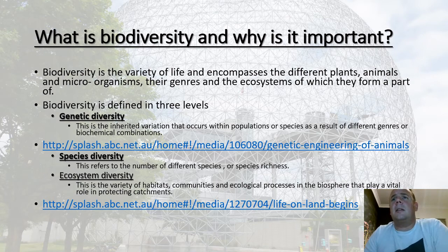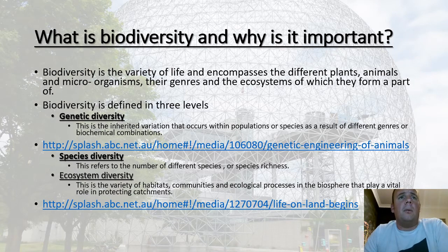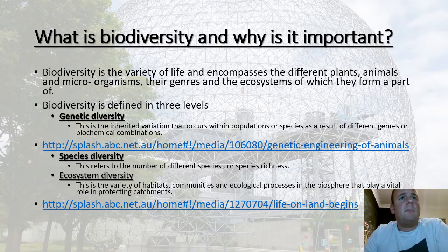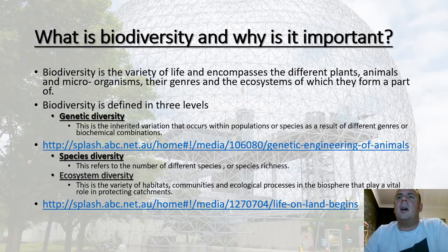A lot of ecologists believe that because of human activity we are going to face the next major mass extinction event. Biodiversity is the variety of life — it encompasses the different plants, animals, and microorganisms, their genes, and the ecosystems they form part of. Biodiversity can be defined at three levels: genetic diversity, species diversity, and ecosystem diversity.